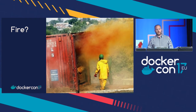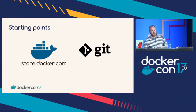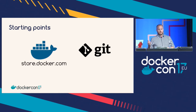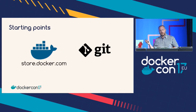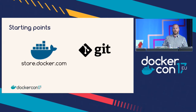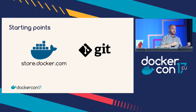So where do we start with our supply chain? The two options, really, are using Store or Git. By Git, we mean pretty much any versioning system out there — SVN, on-prem, cloud, it doesn't matter. Store is a great place to start because you get certified images, official images, and community images. Git, on the other hand, is where you're going to store your Docker files and all your assets for when you build.